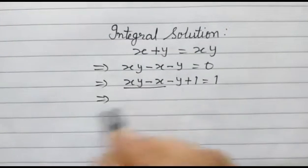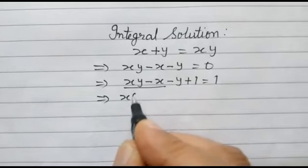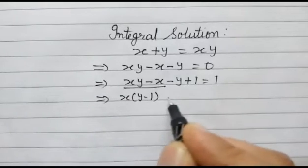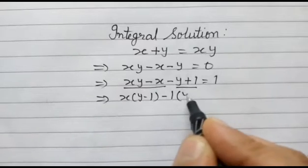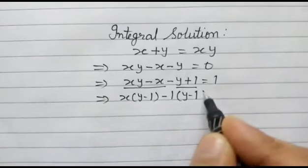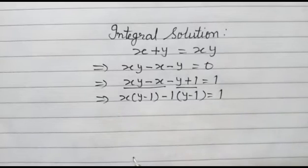So here, we take x as common, so y minus 1, minus here 1 common, so y minus 1 is equal to 1.